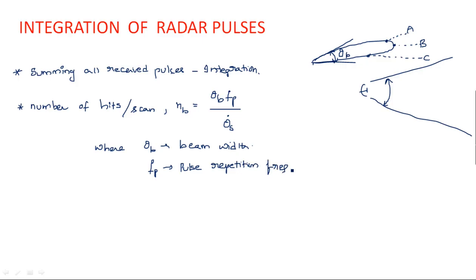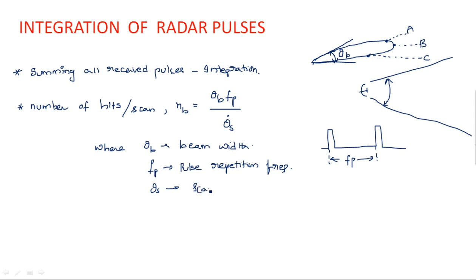f_p is the pulse repetition frequency — the frequency at which the pulses are being repeated. The time period from one pulse to the next is t_p or 1/f_p. θ_s is the scanning rate, the rate of change of the scan angle with respect to time, indicated by θ_s dot. So the number of hits per scan is n_b = θ_b × f_p / θ_s.